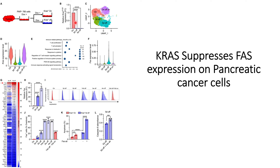Apart from the UMAP analysis showing intracellular changes occurring within pancreatic cancer cells due to KRAS mutations, they also checked KRAS levels at different stages. They can see that KRAS levels are high when KRAS mutations are on under the on-and-off conditions, compared to when KRAS is off.